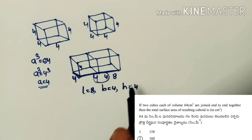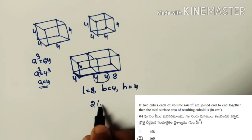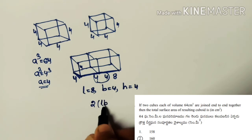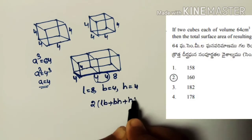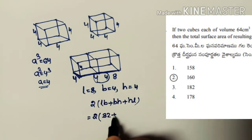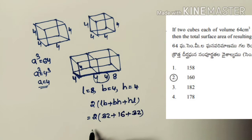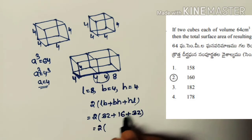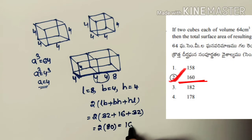Total surface area of cuboid = 2(lb + bh + hl) = 2(8×4 + 4×4 + 8×4) = 2(32 + 16 + 32) = 2 × 80 = 160 cm², which is the second option.